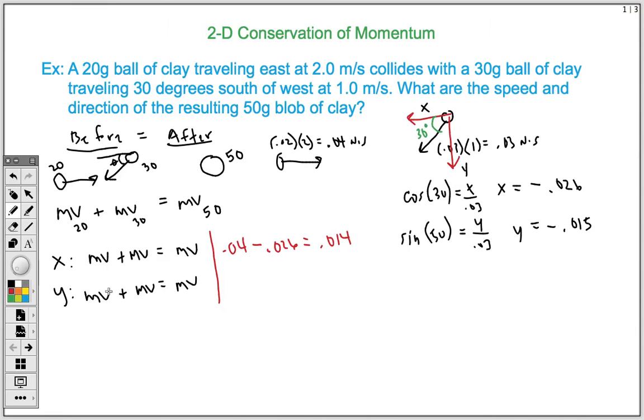Now we're going to do the same thing for the y. This first 20 gram ball is traveling completely east. There's no y component, so that becomes 0. And we solved for the y component of the other object to be negative 0.015. So we're going to subtract 0.015, which gives us negative 0.015. These two momentums here, we can come up with vectors for them, meaning the collision afterwards, the 50 gram ball has an x component momentum of 0.014 and a y momentum component of negative 0.015. So we get an x component 0.014 and a negative y component of 0.015.